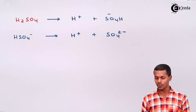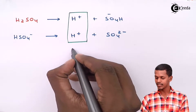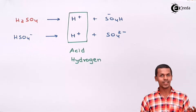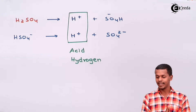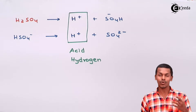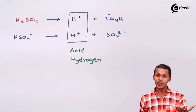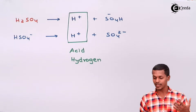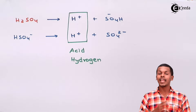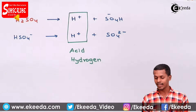Again, HSO4- will also dissociate completely to form H+ along with SO4 2-. So overall H2SO4 gives us two protons, known as acid hydrogens. This is a diprotic acid because H2SO4 gives two H+ ions. The ionization takes place in two steps: first ionization and second ionization.